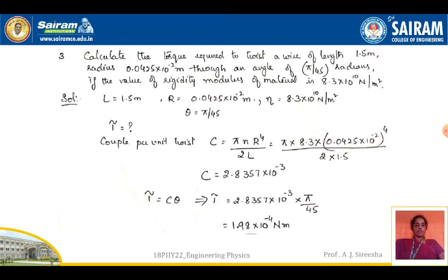The rigidity modulus is given. The formula for couple per unit twist of a cylindrical body, derived in theory classes, is C = πNr⁴ / 2L. Since torque is related to couple per unit twist, torque τ = C·θ, which comes from the torsion of a cylinder derivation. L, R, rigidity modulus N, and θ = π/45 are all given; we calculate torque τ.